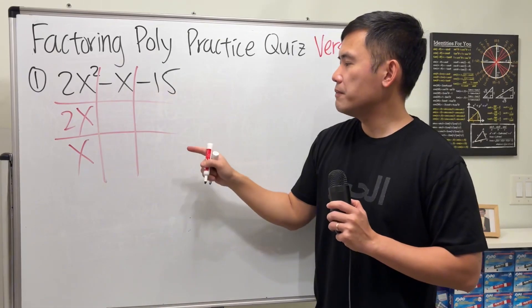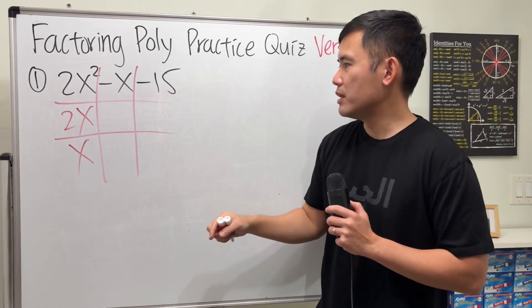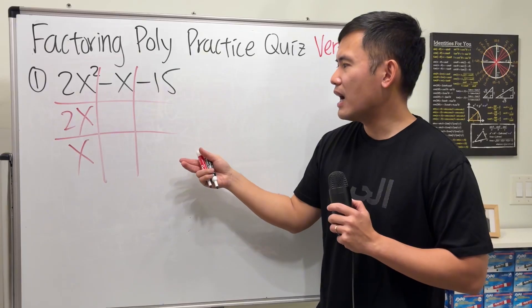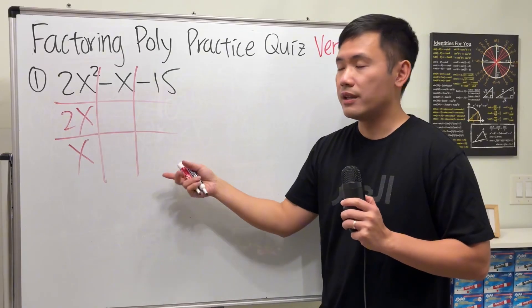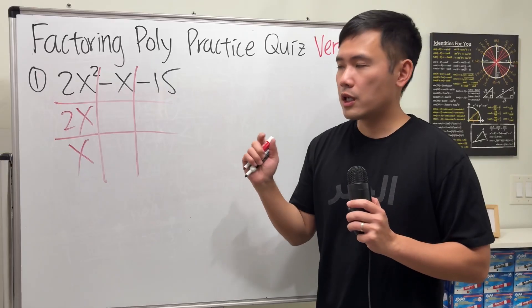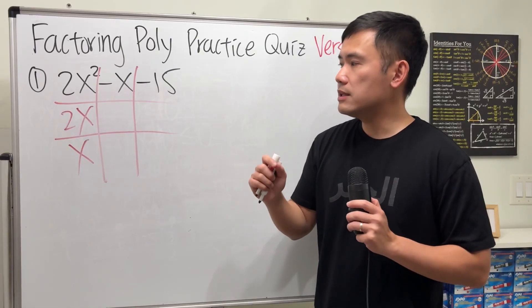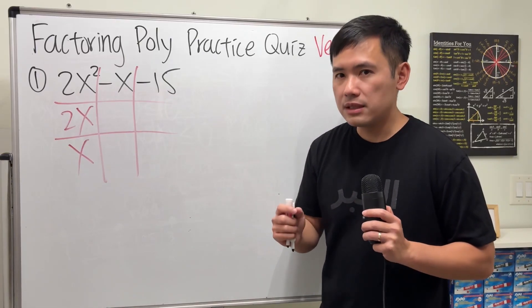Now for the negative 15, we may have to try a little bit, right, like 3, negative 5, and then it depends on where you put the numbers as well. I will tell you the correct numbers that we are going to use is negative 3 and positive 5.